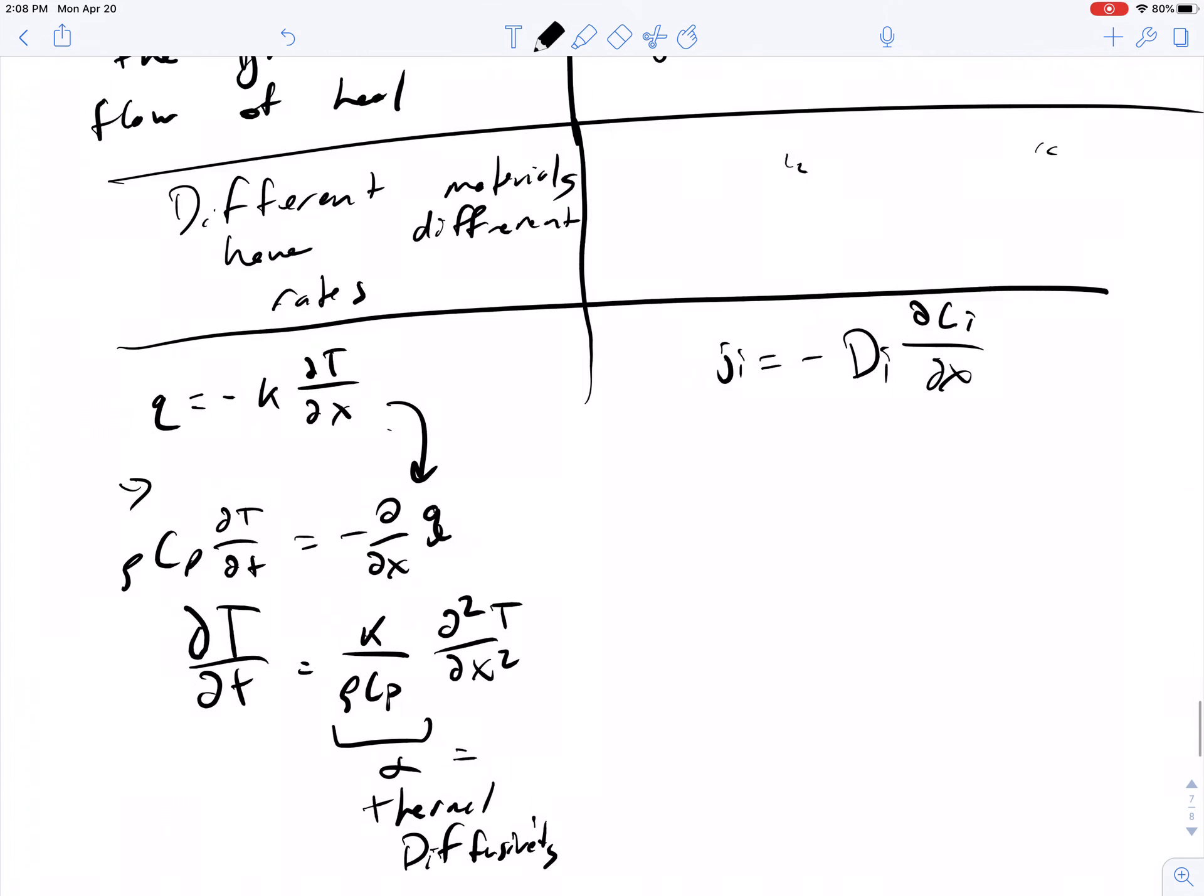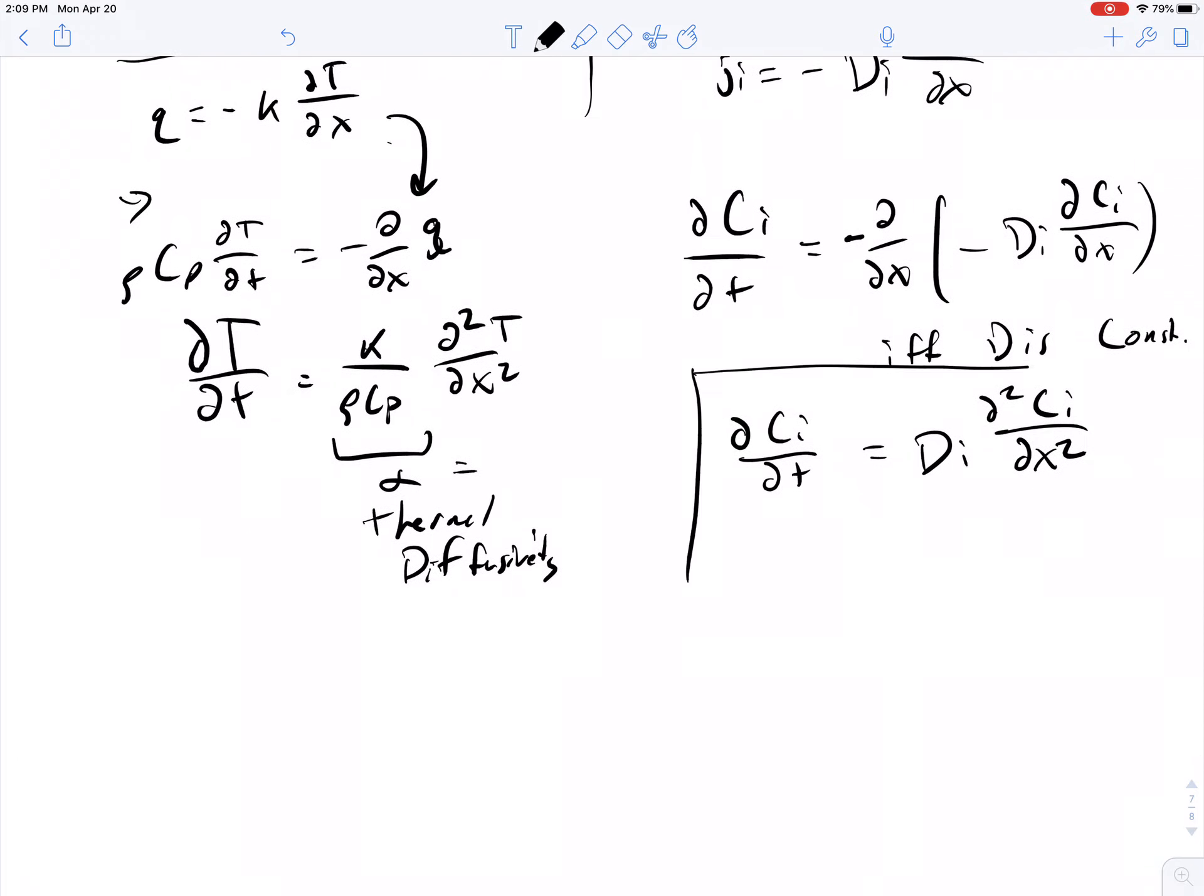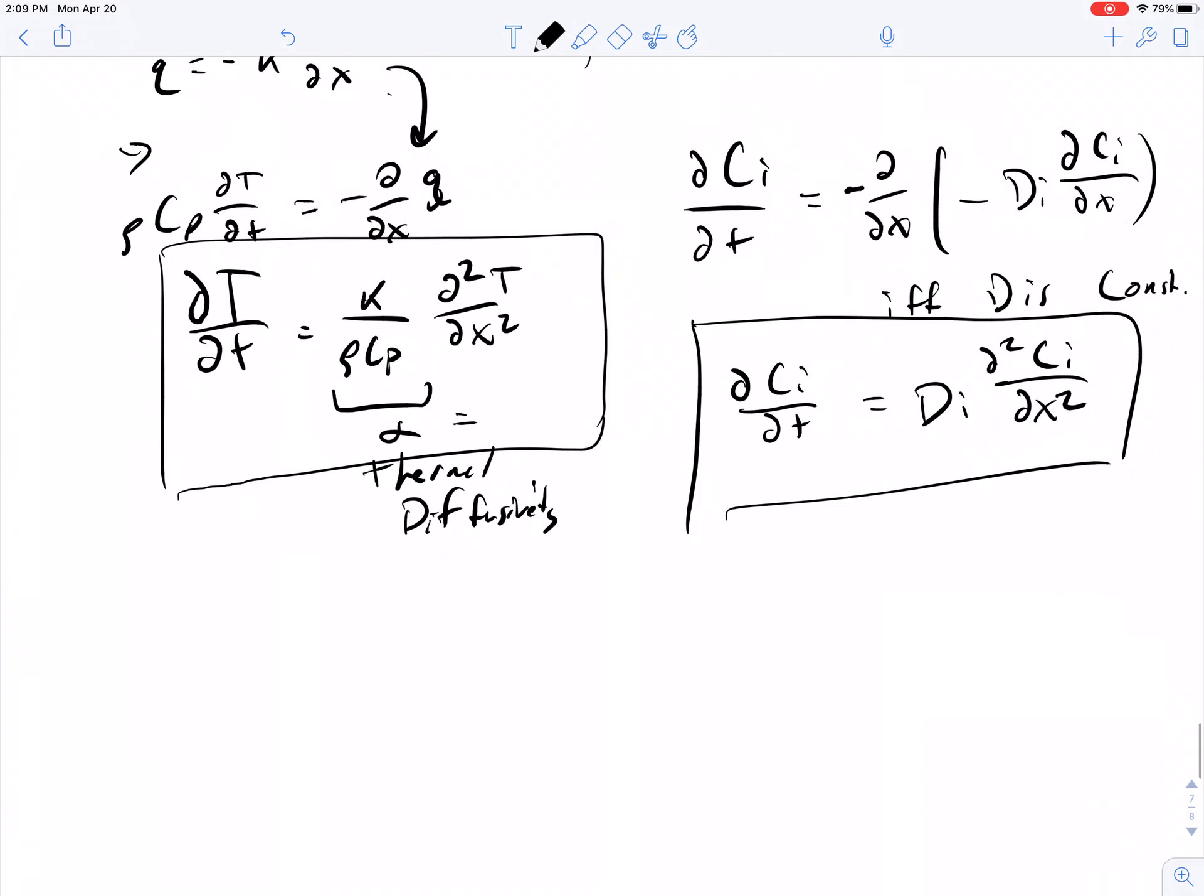When you substitute this into the equation for concentration, ci over t, you end up with minus partial by partial x of minus di del ci del x. If D is constant, then you end up with del ci del t equals di del squared ci del x squared. By analogy, D and alpha have the same units: length squared over time.